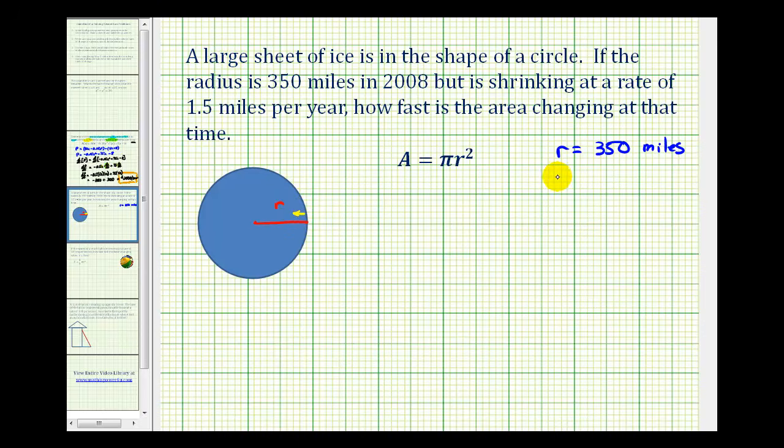This is telling us that dr/dt, or the change of r with respect to time, is equal to negative 1.5 miles per year. And again, it's negative because it's shrinking.